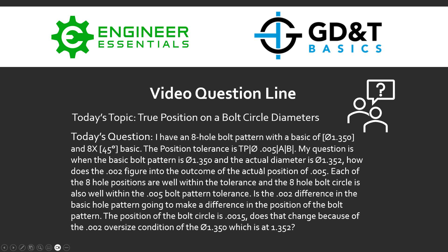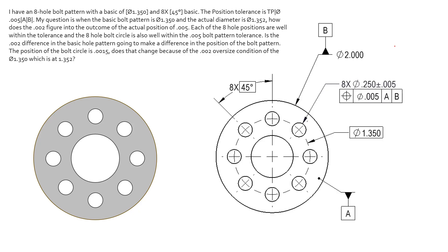So there's a lot to unwrap here, and it's very common to see position on a bolt circle diameter. Let's take a look at what this interpretation actually is. Here we see a pattern of eight holes — again, each one of those holes has its own size dimension and tolerance of five thousandths, but we also see each one has a position tolerance of five thousandths diametrically with respect to A and B. Now these eight holes are arranged on a bolt circle diameter of 1.350, just like the question said, and they're spaced equally at 45 degrees from each other.